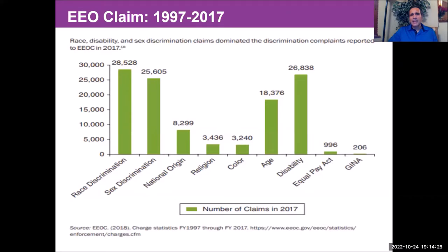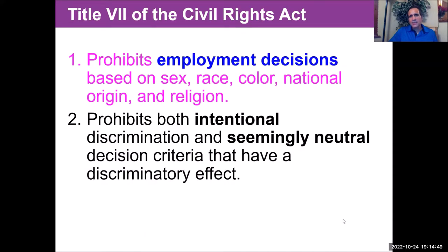Twenty-year data from 1997 to 2017 shows discriminatory practices including racial discrimination with over 28,000 cases, as well as sex discrimination, national origin, religion, color, age, disability, and more. Title VII of the Civil Rights Act prohibits employment decisions based on these protected categories of gender, color, national origin, religion, and so on. It prohibits both intentional discrimination as well as seemingly neutral decision criteria that have a discriminatory impact — otherwise known as adverse or disparate impact.